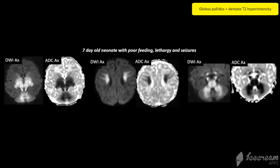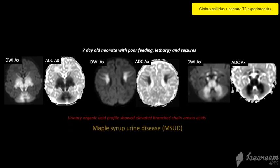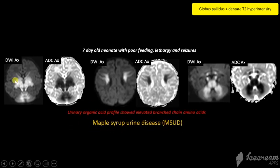This is a classic case of maple syrup urine disease. You can see that in addition to involvement of the myelinated white matter, there is involvement of the globus pallidus and dentate nuclei.